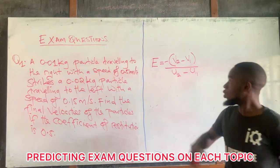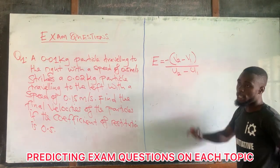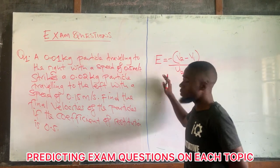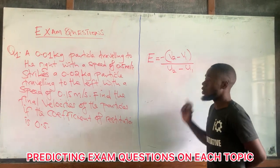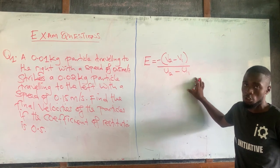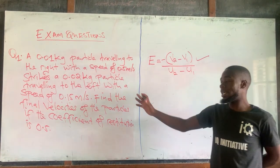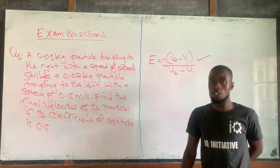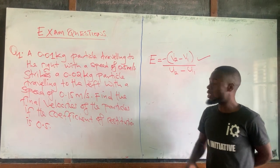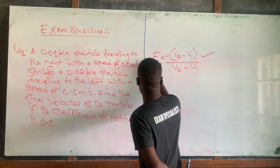In our previous video, I showed you where this formula is coming from — I explained where this formula comes from and how it was derived. So this is the formula for coefficient of distribution, and this is the first thing you need when you answer such questions.